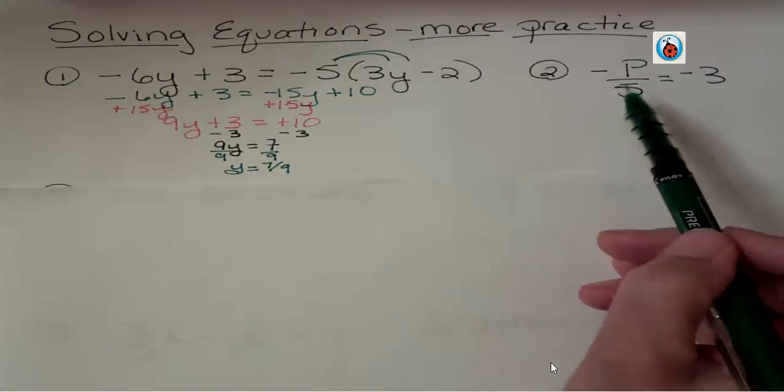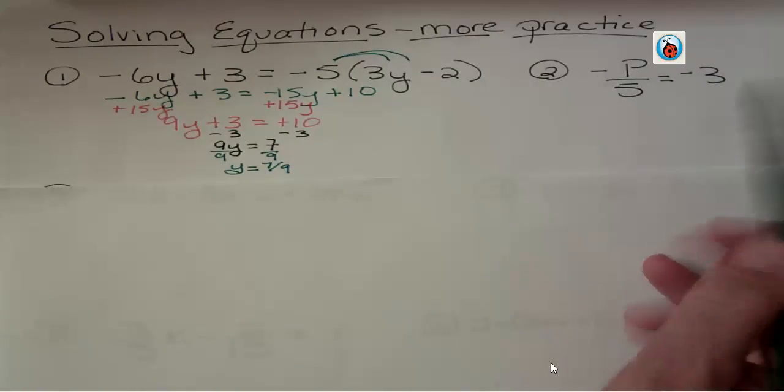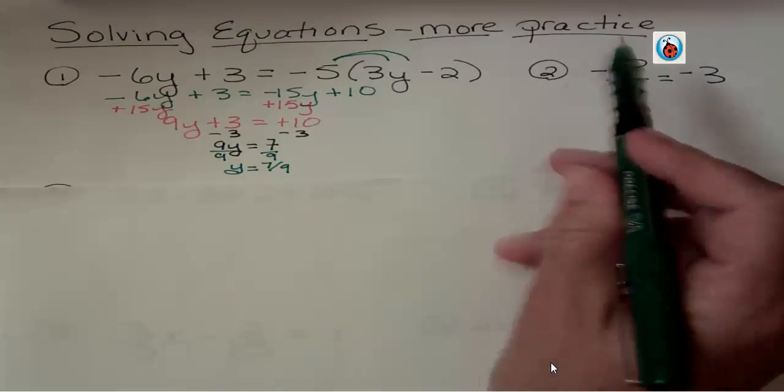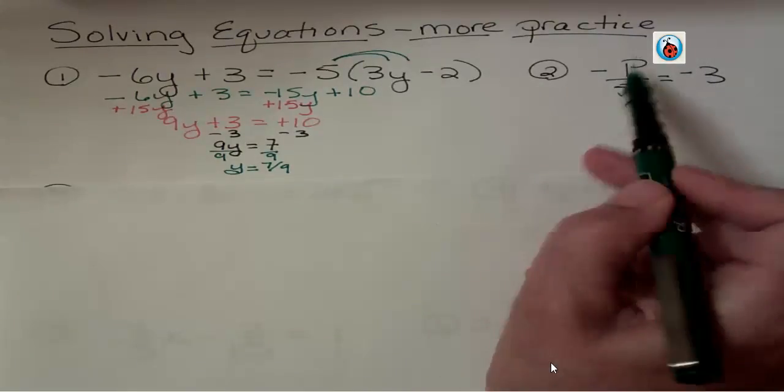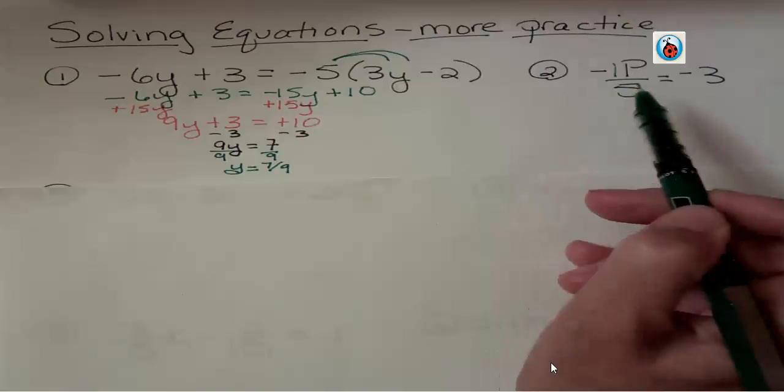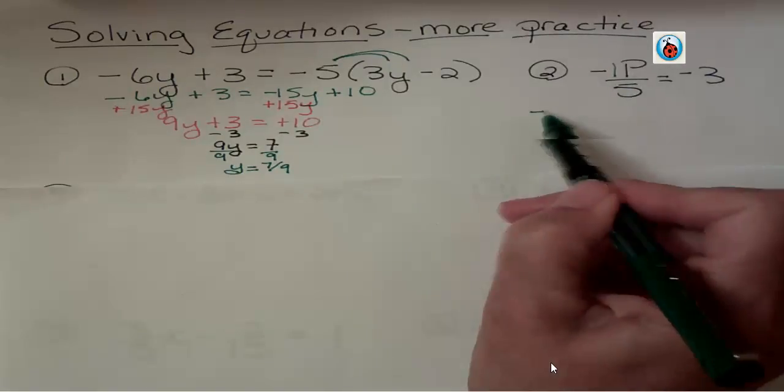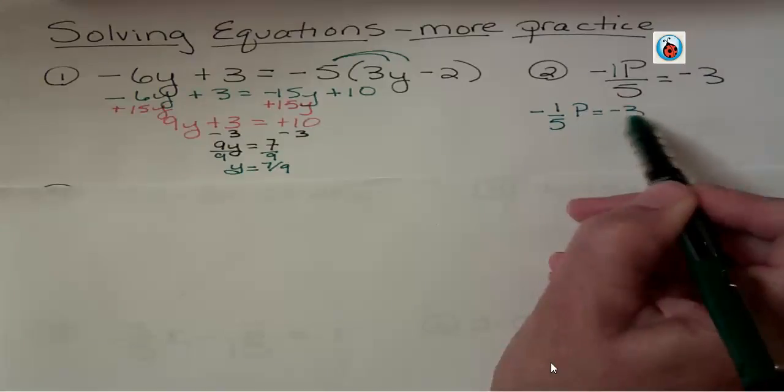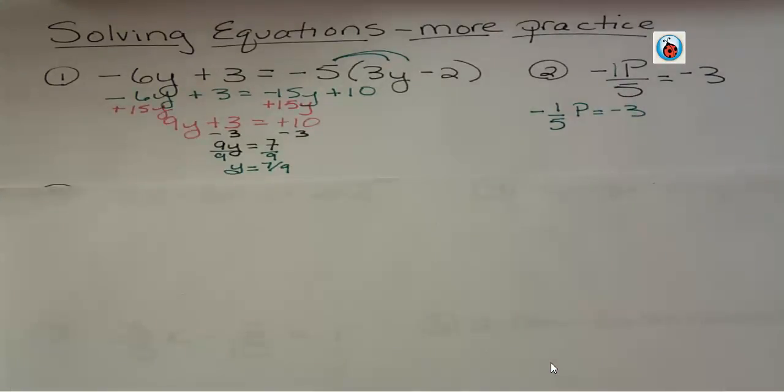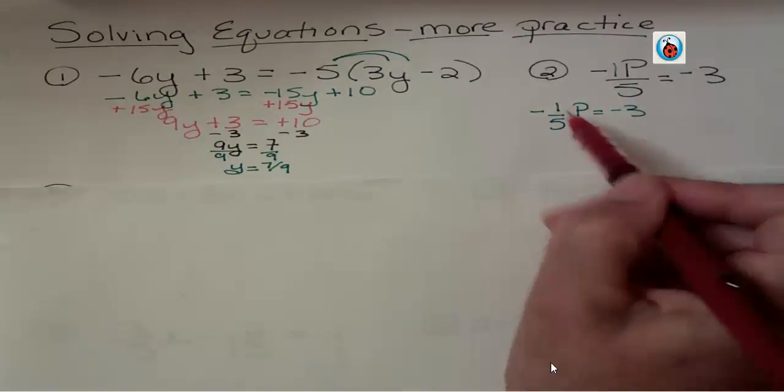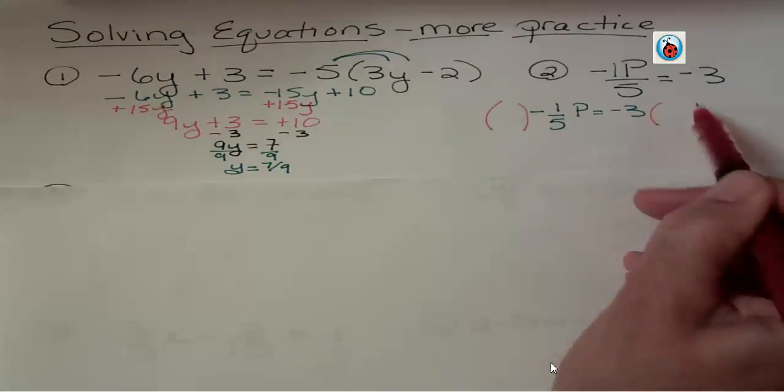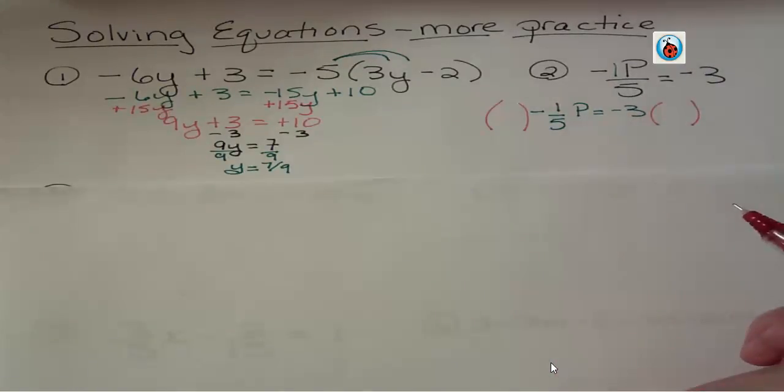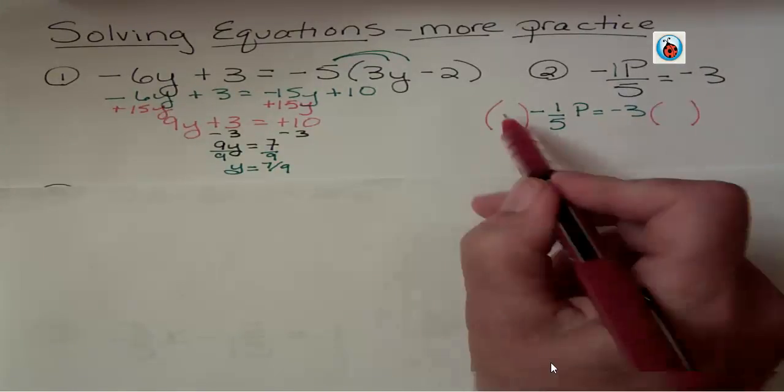What's happening here? Negative p over 1/5 equals negative 3. People really have trouble with this one. You have to remember that this is like a negative 1 up there, even though we don't see it. You can think of it as negative 1/5 p. It's just a different way to look at it. You could divide both sides by negative 1/5, or we could multiply by the reciprocal. When you have a fraction, if you multiply it by its reciprocal, we get positive 1. That's what we want.